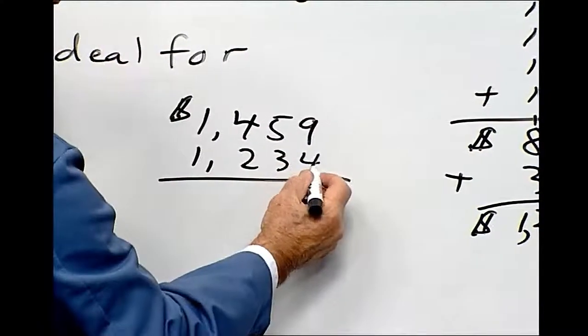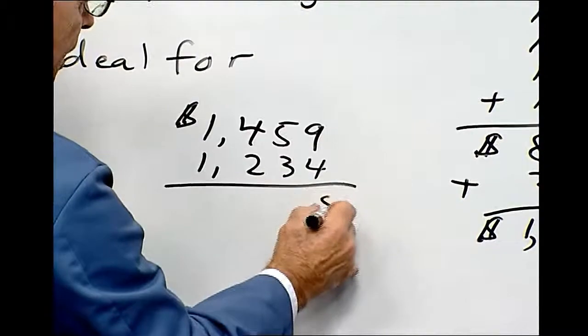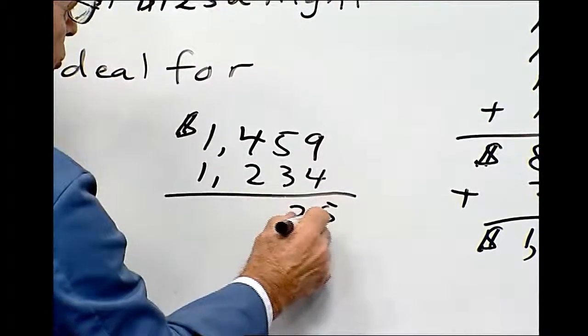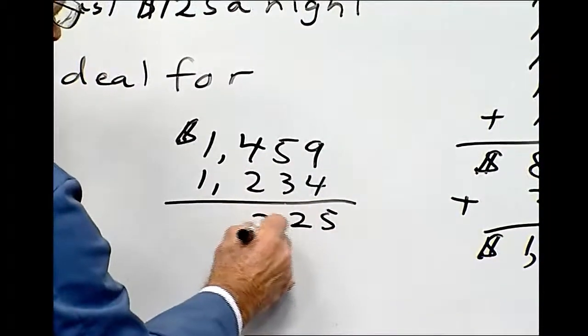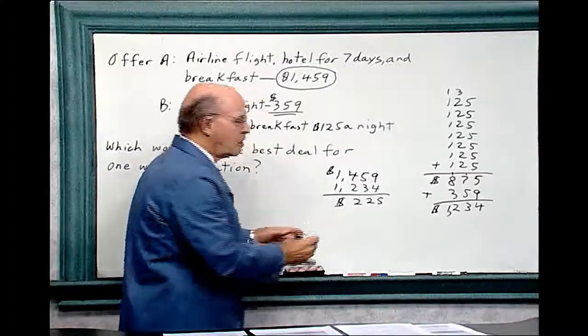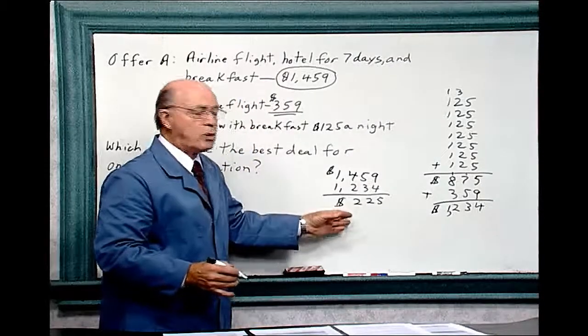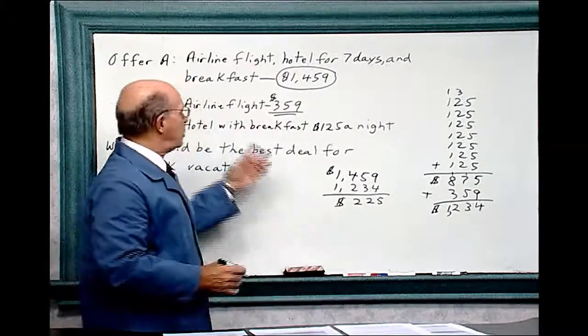4 from 9 is 5, 3 from 5 is 2, 2 from 4 is 2. So you would save $225 with offer B.